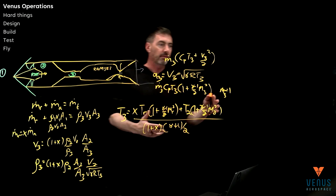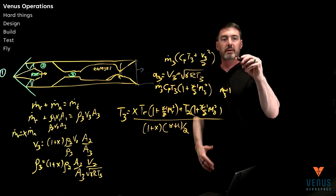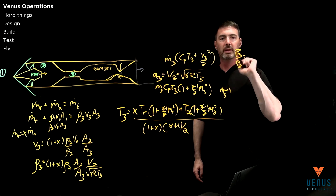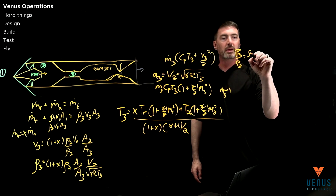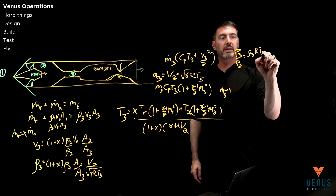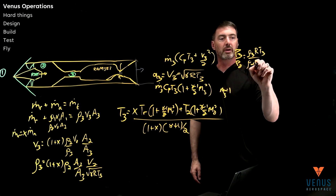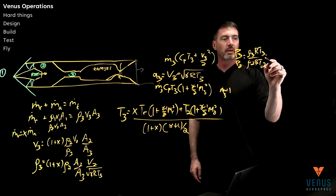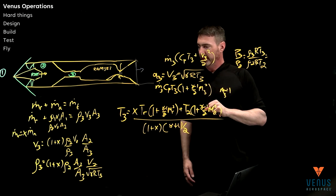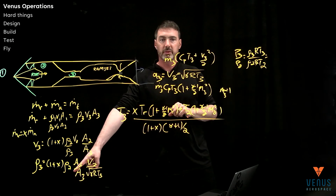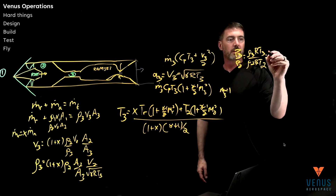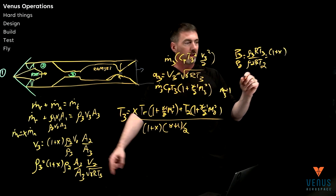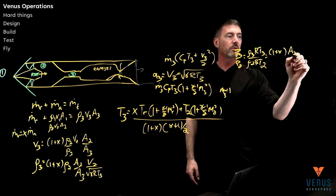What we're really after is the pressure gain. So for P3 over P2, we just plug in the ideal gas relation: rho3*R*T3 over rho2*R*T2. The R cancels, and so you have rho3 over rho2 — you can see rho2 on the bottom.